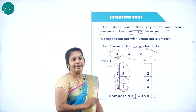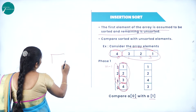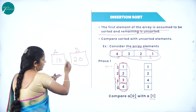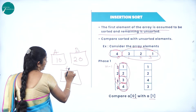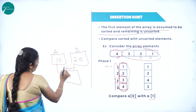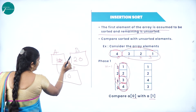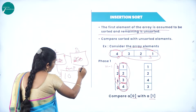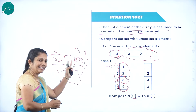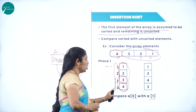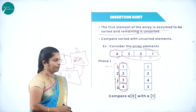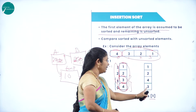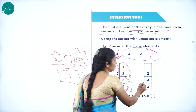Swapping means interchanging the value. For example, consider two memory locations A and B where A has 10 and B has 20. To interchange, we take one temporary place, move the value of A there, then move B's value (20) to A's location, and finally move the temporary value to B. In this case, A of 0 has 4 and A of 1 has 3. Since 3 is less than 4, swapping takes place and the array becomes 3, 4, 2, 1 at positions 0, 1, 2, 3. This completes the first phase.